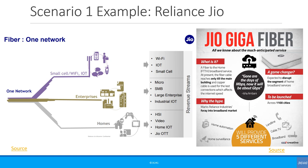An example of this could be the Indian mobile network Reliance Jio. To be able to reach quickly and cost-effectively to different parts of India, Jio started rolling out Jio Gigafibre. This allows them to connect their mobile towers quickly and also provide additional services to end users, such as home automation, home surveillance, landline phone, cable TV, broadband, etc.